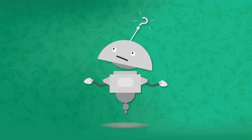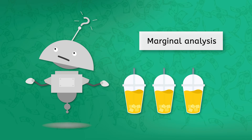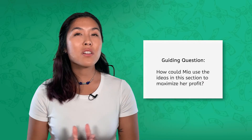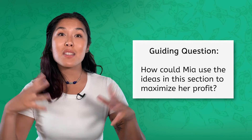So how should Mia decide when to produce more or stop? She should use marginal analysis: keep making more as long as the marginal profit is positive. Once it's not, she'll stop. Consider our example — how could Mia use these ideas to maximize her profit? Pause the video and record your thoughts in the PDF.